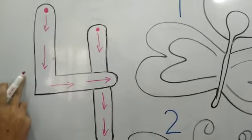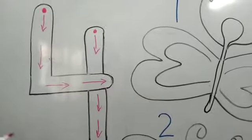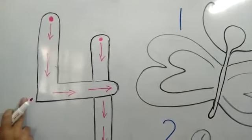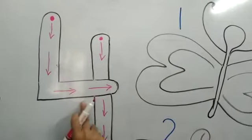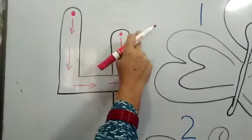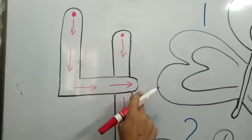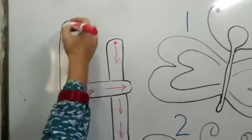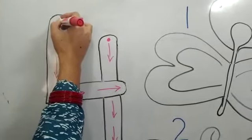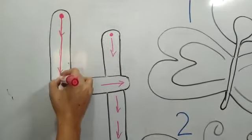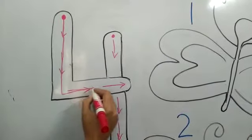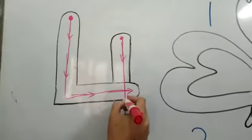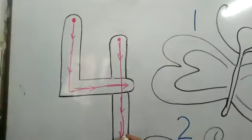How we write number 4? 1 comes down, 10 to the right, the other runs down without its mind. Once again, 1 comes down, runs to the right, the other runs down with all its mind.